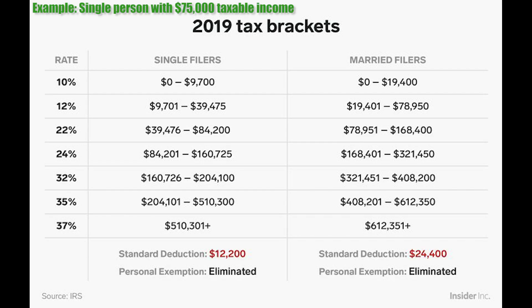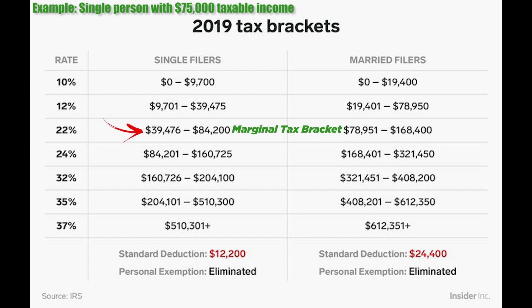Let's look at the federal tax brackets for 2019 and assume our person is single with a taxable income of $75,000. Different portions of their income are taxed at different levels: every dollar from $0 to $9,700 is taxed at 10%, every dollar from $9,701 to $39,475 is taxed at 12%, and every dollar from $39,476 to $75,000 is taxed at 22%. So 22% is their marginal tax bracket, but when they total up those smaller amounts, they may find they actually paid a lower effective tax rate.